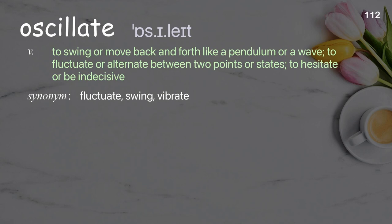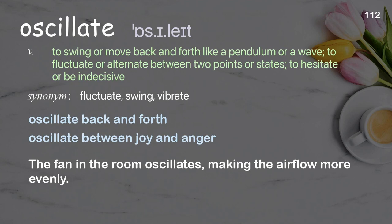Oscillate: To swing or move back and forth like a pendulum or a wave; to fluctuate or alternate between two points or states; to hesitate or be indecisive. Examples: Oscillate back and forth, Oscillate between joy and anger. The fan in the room oscillates, making the air flow more evenly.